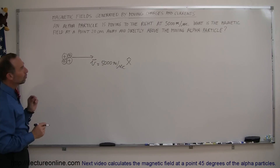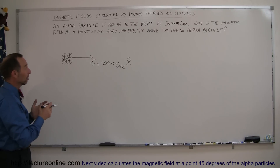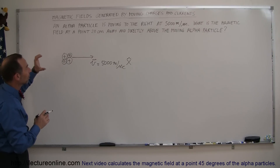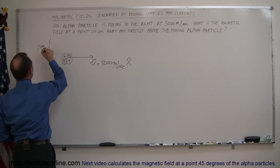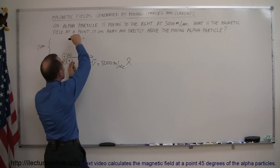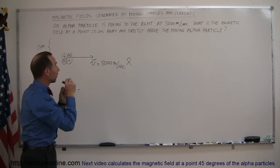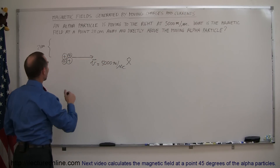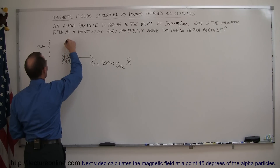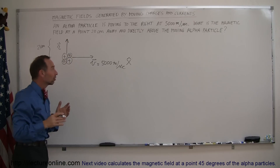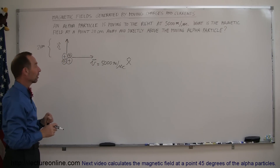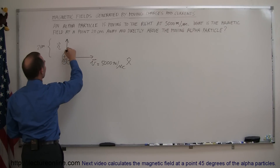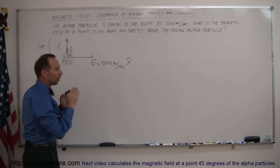We want to know the magnetic field direction and magnitude two centimeters directly above the alpha particle. As the particle moves, that position moves along with it. We draw a position vector — the vector pointing from the particle to the point of interest — and the unit vector in that direction is called r-hat.